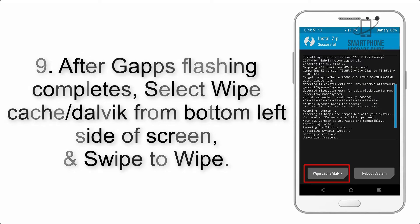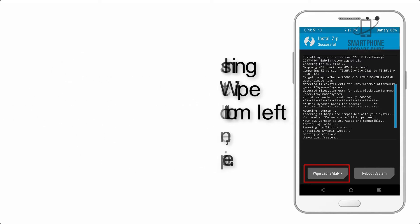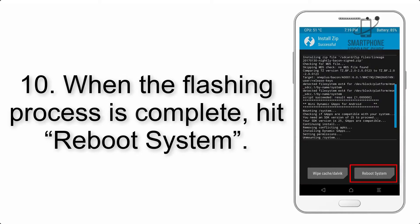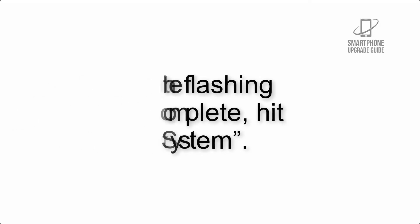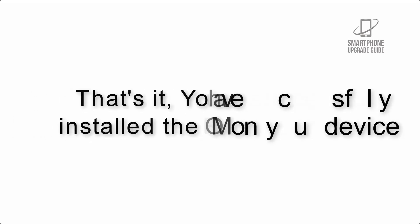Step 9: After GApps flashing completes, select Wipe Cache and Dalvik from the bottom left side of the screen and swipe to wipe. Step 10: When the flashing process is complete, hit Reboot System. That's it — you have successfully installed the ROM on your device.